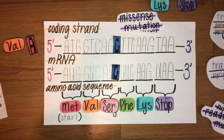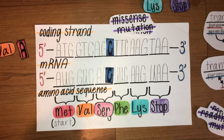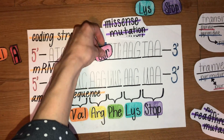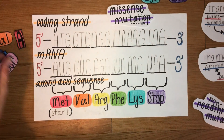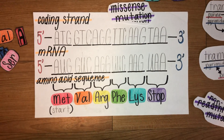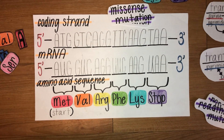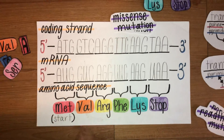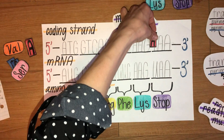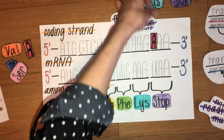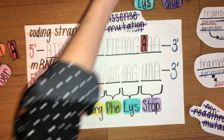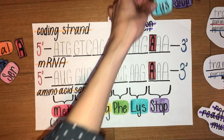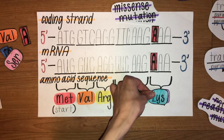Moving on to our next example, we're going to be looking at a mutation in our last codon. This is going to be a transversion as we're going from A to T. Going through the same process, we see the respective change in our mRNA and then in our stop codon.